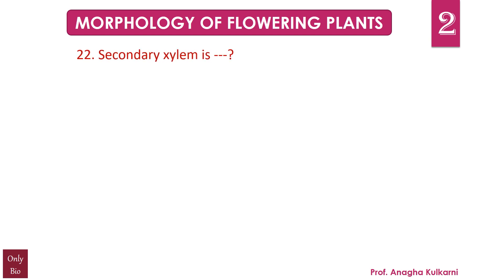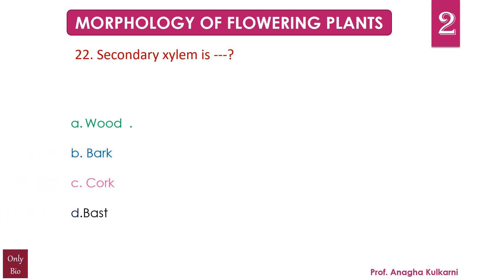Question number 22. Secondary xylem is dash. A. Wood. B. Bark. C. Cork. D. Bast. The correct answer for this question is A — Wood. So secondary xylem is wood.